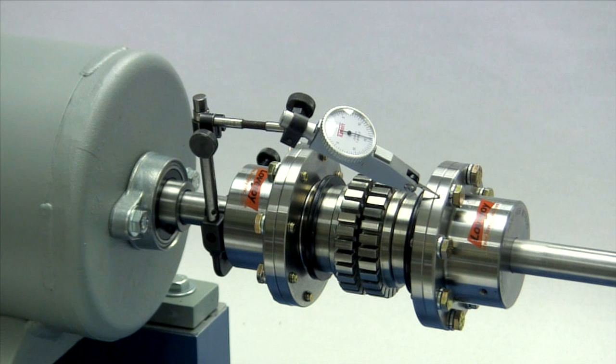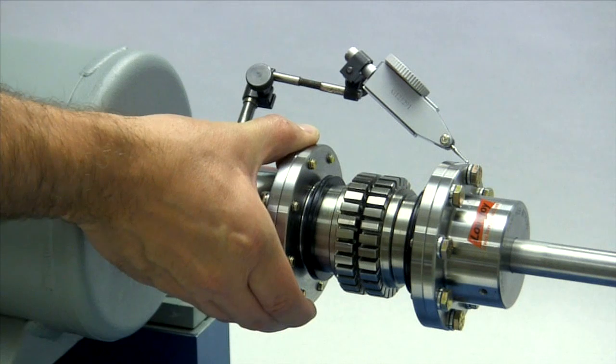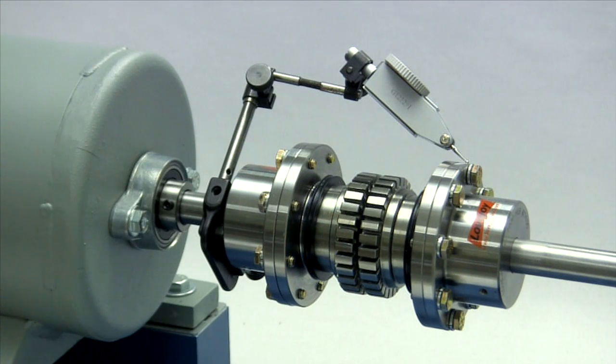If using a dial indicator to check the parallel alignment, mount the indicator on the driver's shaft with the sensor touching the hub on the opposite shaft. Rotate the shaft with the indicator to the three o'clock, six o'clock, nine o'clock, and twelve o'clock positions, and make notes of the deviation on the dial. If this deviation exceeds the value in the column labeled parallel, you will need to realign the equipment to correct this condition.